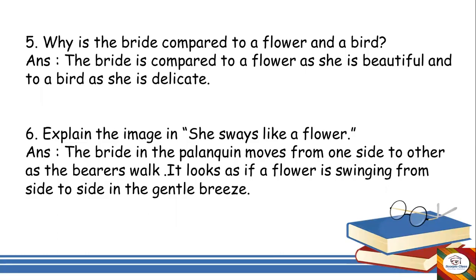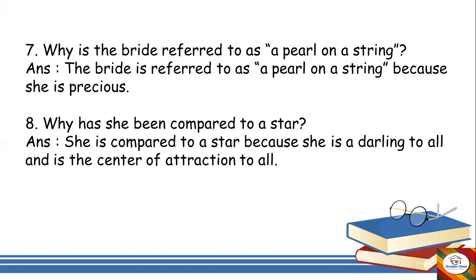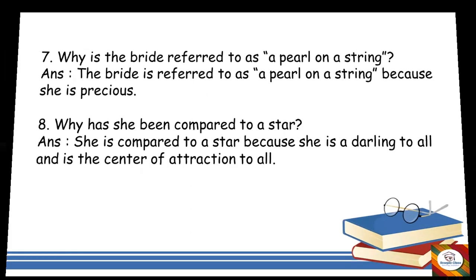Next question: explain the image 'she sways like a flower.' The bride in the palanquin moves from one side to the other as the bearers walk. It looks as if a flower is swinging from side to side in a gentle breeze. Next: why is the bride referred to as a pearl on a string? The bride is referred to as a pearl on a string because she is precious. Why has she been compared to a star? She is compared to a star because she is a darling to all and is the center of attraction.